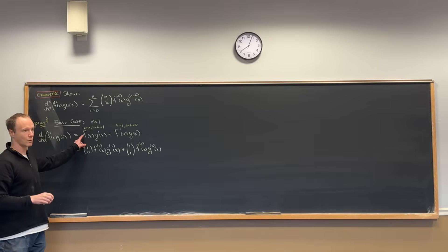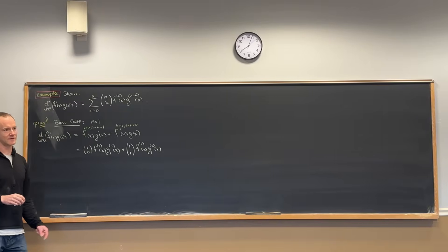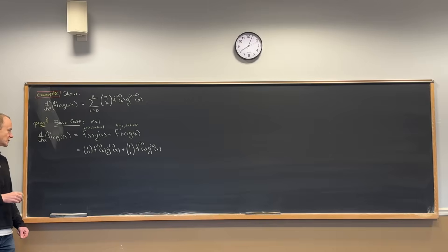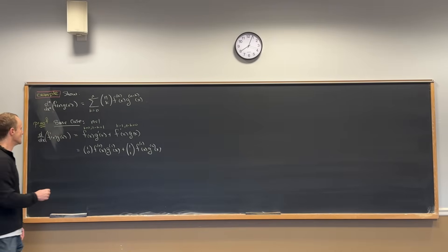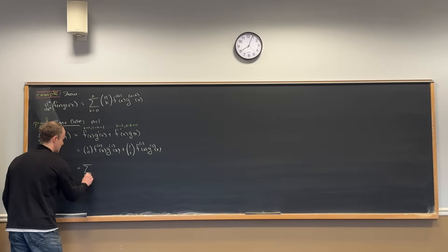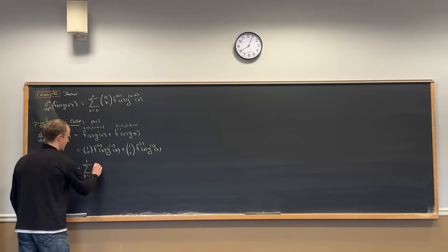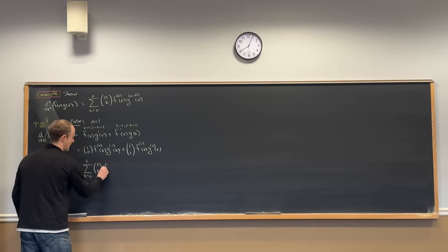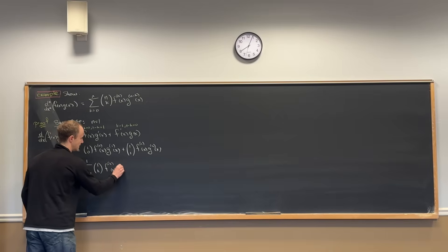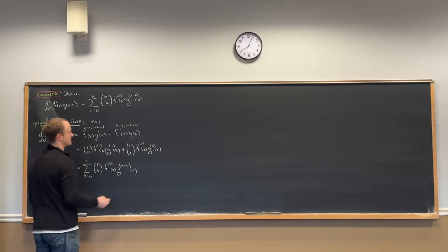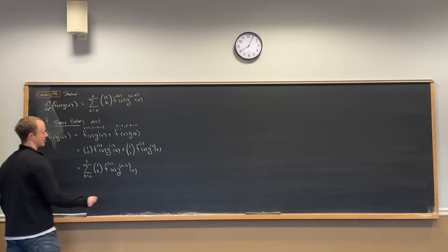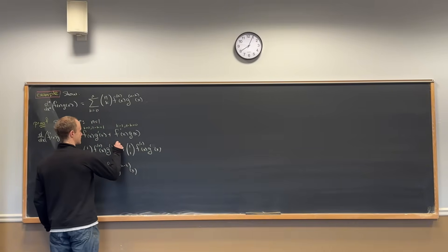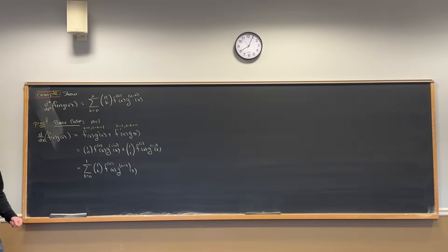Notice that there's a 1 here: 1 choose 0 is 1, so we write it as 1 choose 0. And there's a 1 here too — we write it as 1 choose 1. Now check it out: this is exactly equal to the sum as k goes from 0 to 1 of 1 choose k, then the kth derivative of f, then the (1 minus k)th derivative of g. The base case is proven.